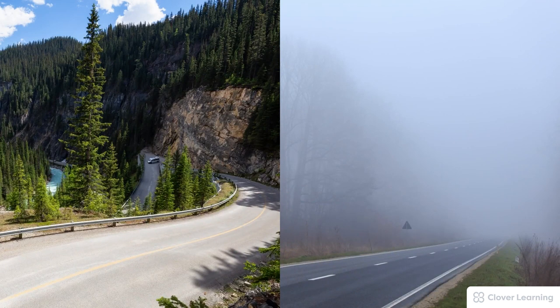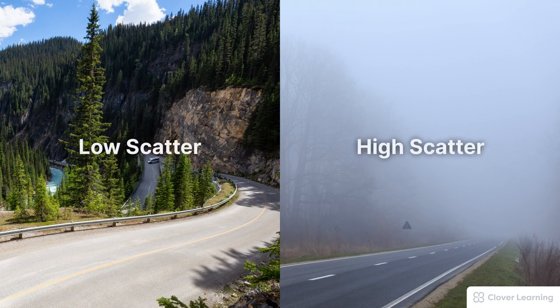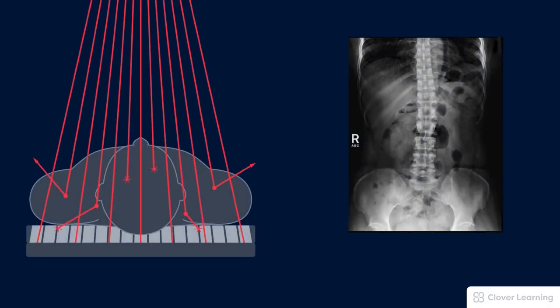Scatter is like a fog. On a bright, sunny day, the landscape is clearly visible. But on a foggy day, the landscape is still there, but the fog obscures the visibility of the landscape. Scatter is exactly like this — it creates a layer of meaningless noise in the radiograph that obscures the visibility of the underlying anatomy. So what can we do about scatter? That's where grids come in.